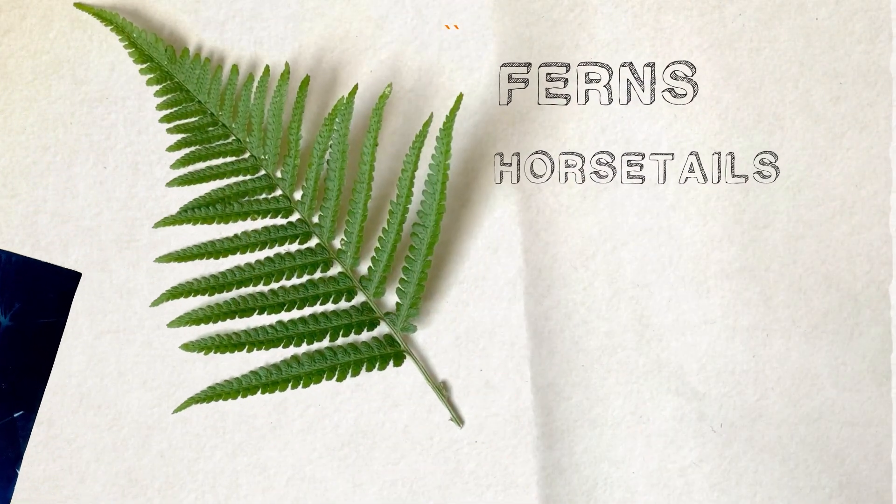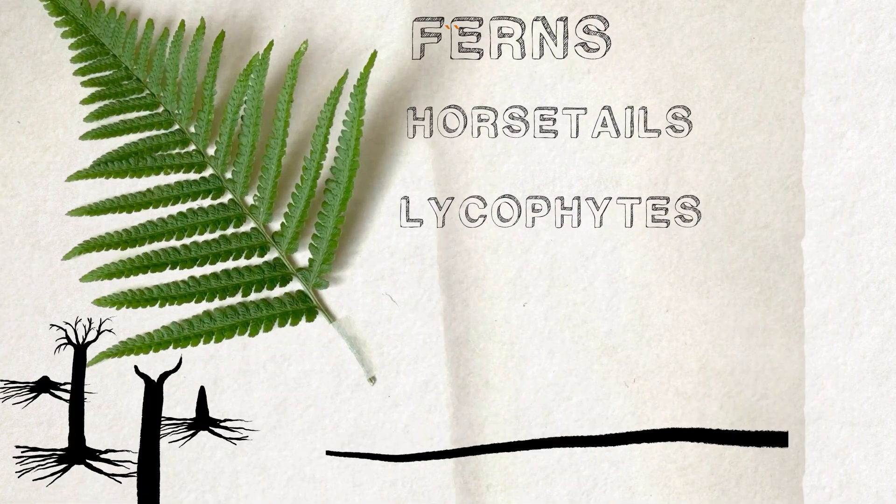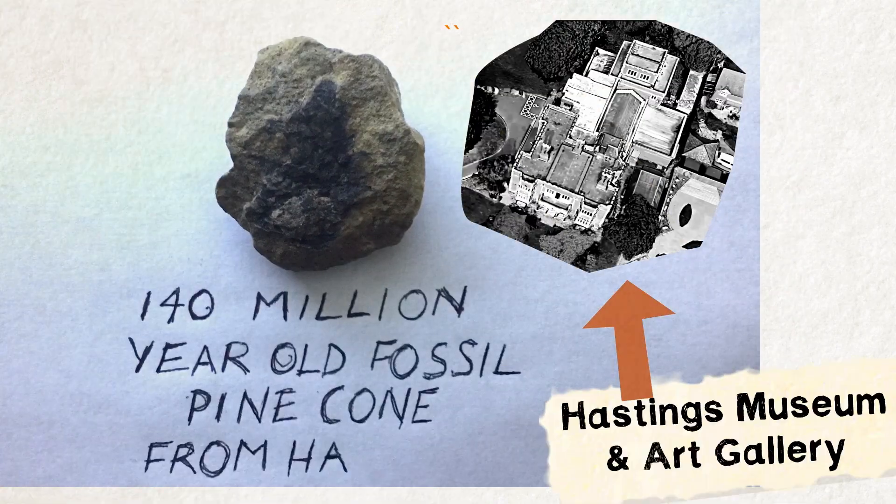The first trees were ferns, horsetails and lycophytes which grew in forests in the Carboniferous period. Hastings Museum and Art Gallery has fossils of some of these in its collection.